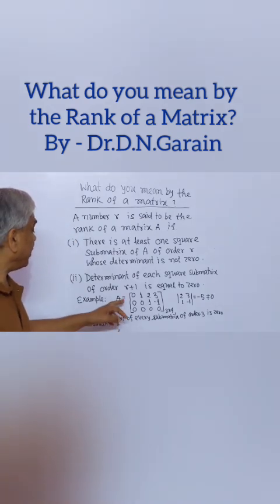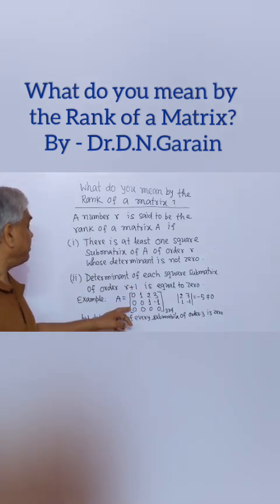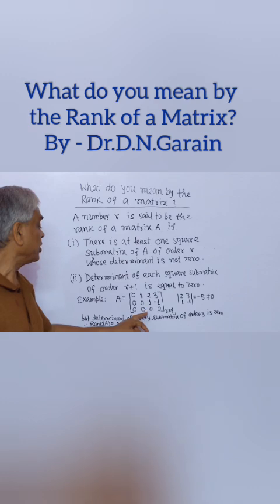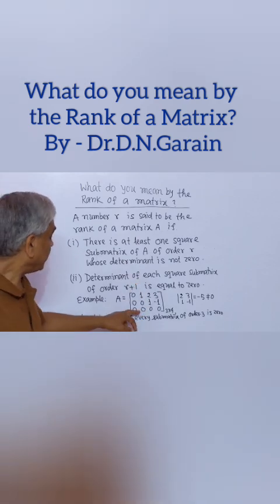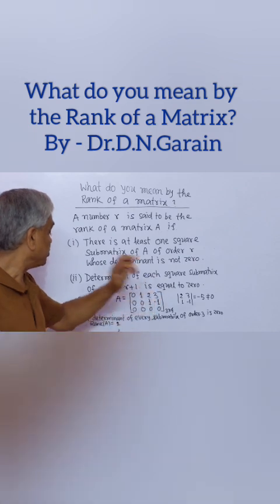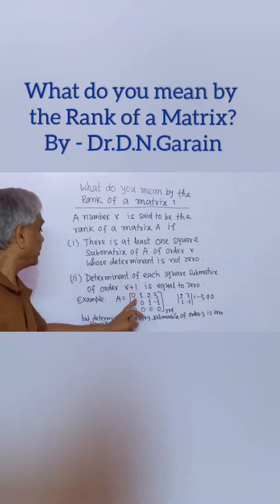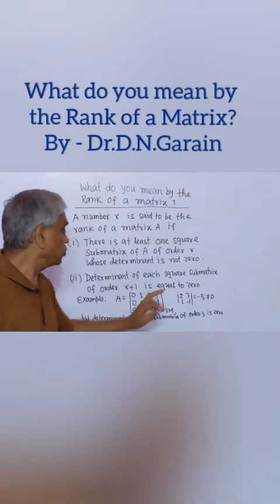But determinant of every square sub-matrix of order 3 is zero, because in this case we get one zero row or one zero column. Therefore, rank of A will be 2.